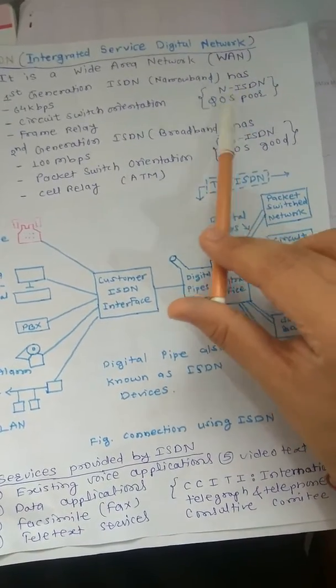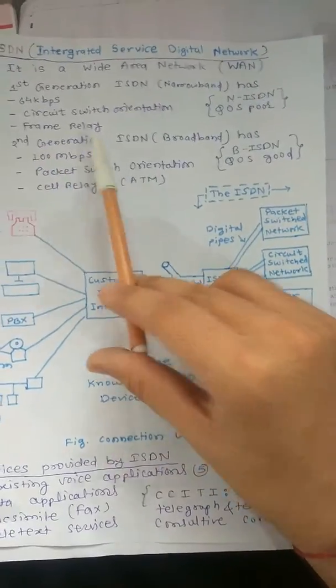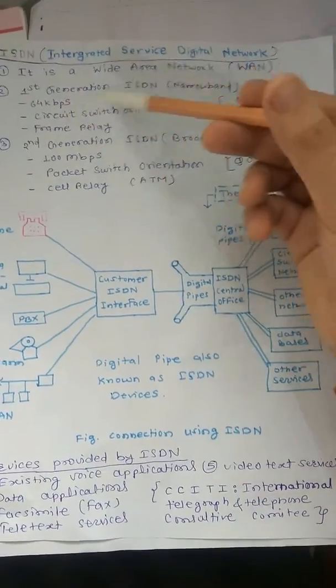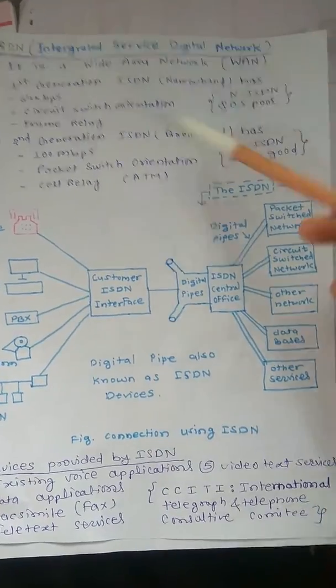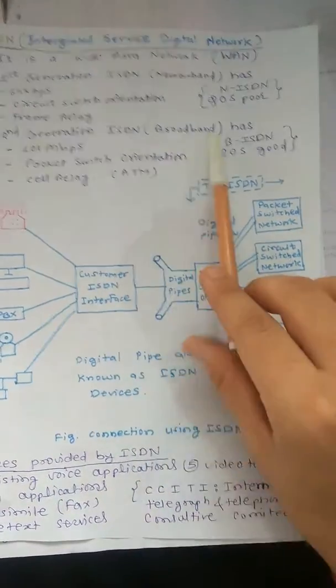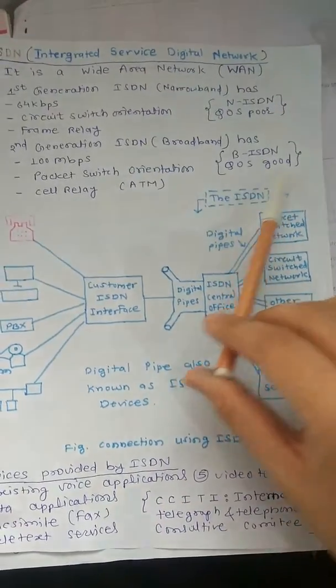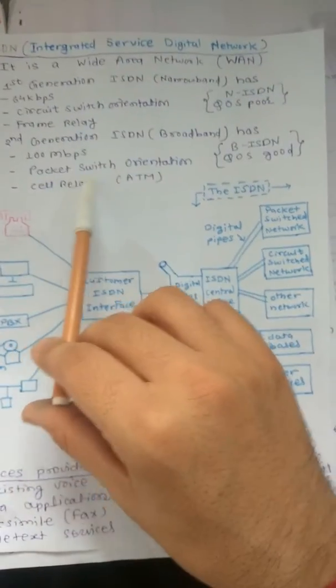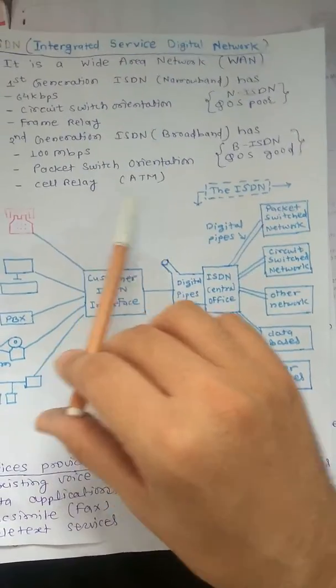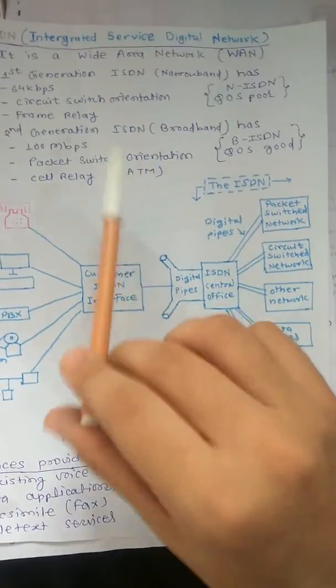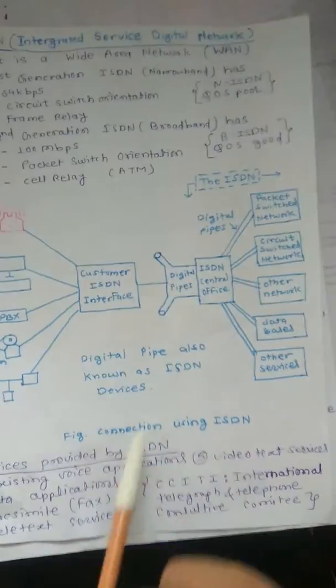The second generation overcomes all the disadvantages of the first generation. It's also known as broadband or BISDN. Quality of service is good, 100 Mbps speed, packet switching orientation is used, and cell relay is here, which is part of ATM.